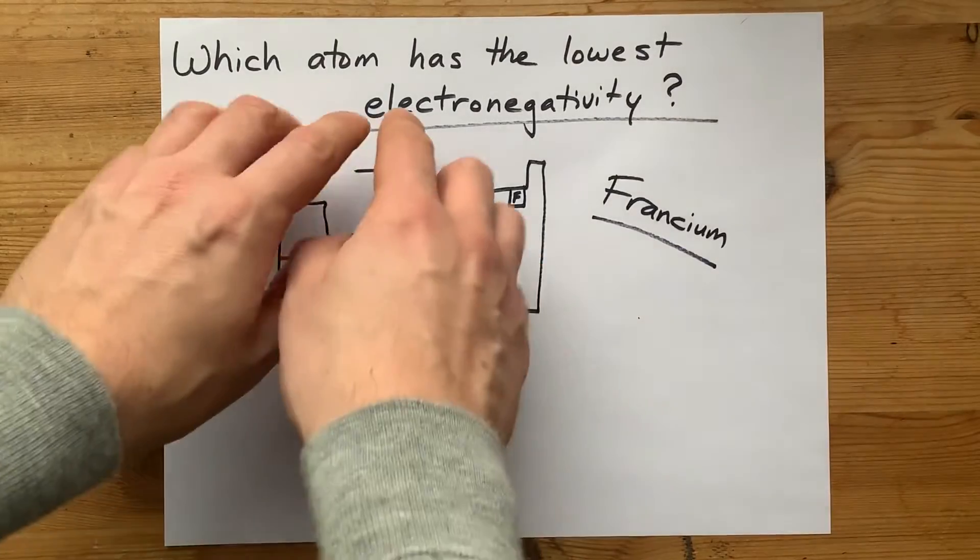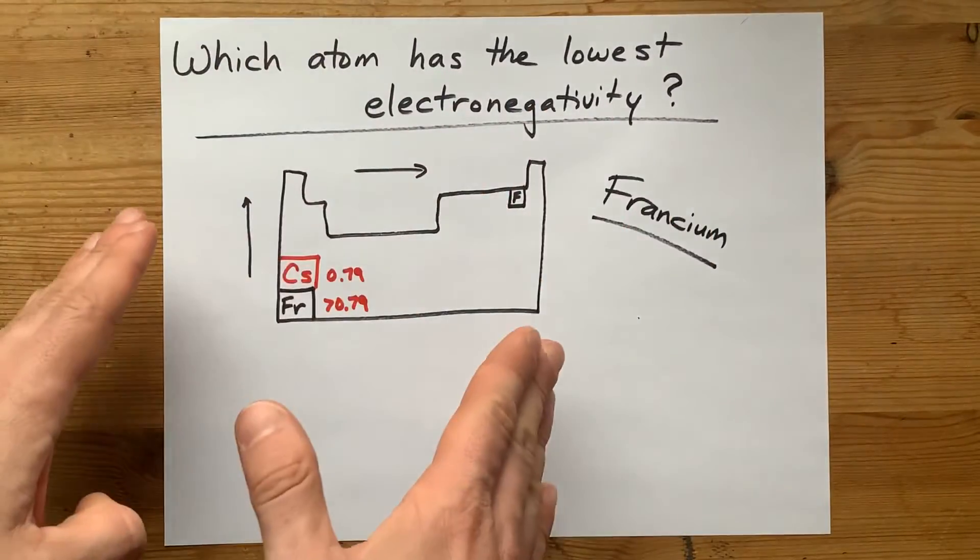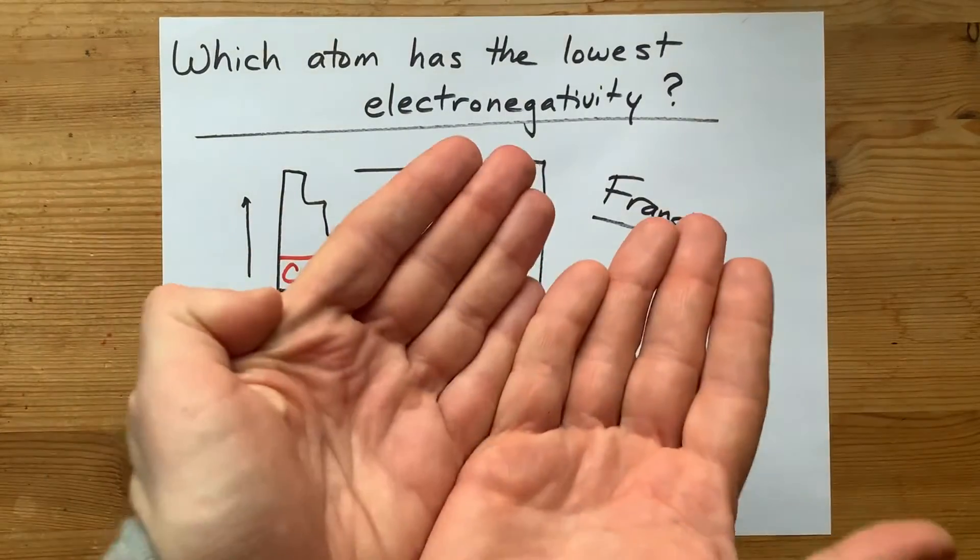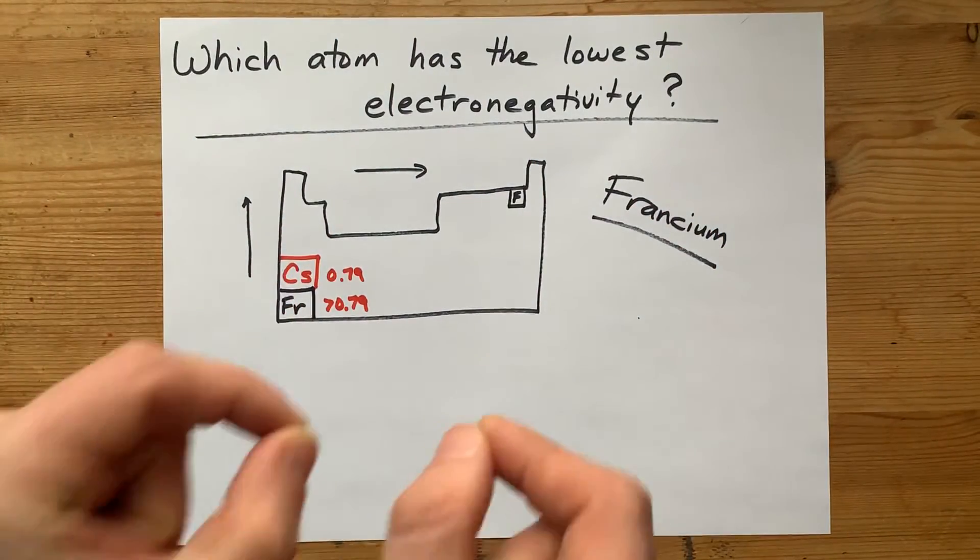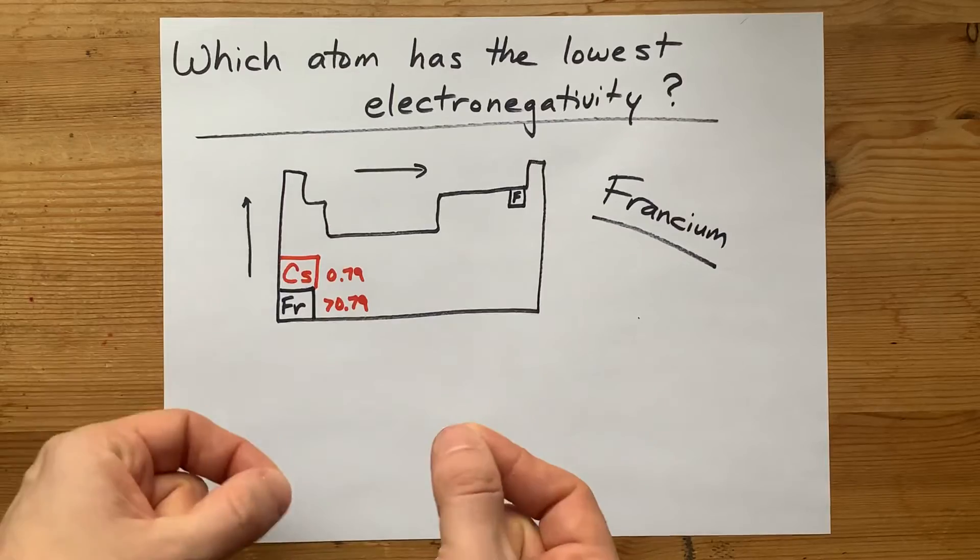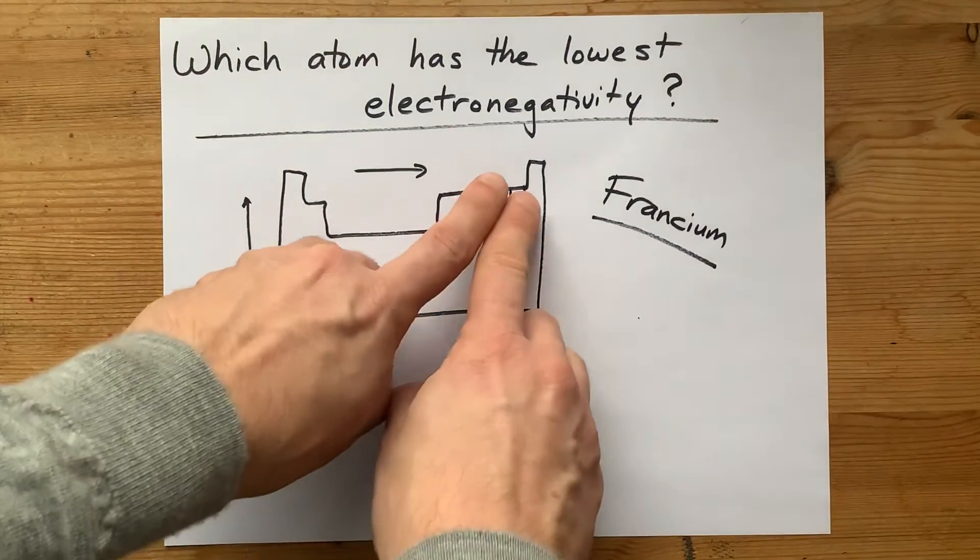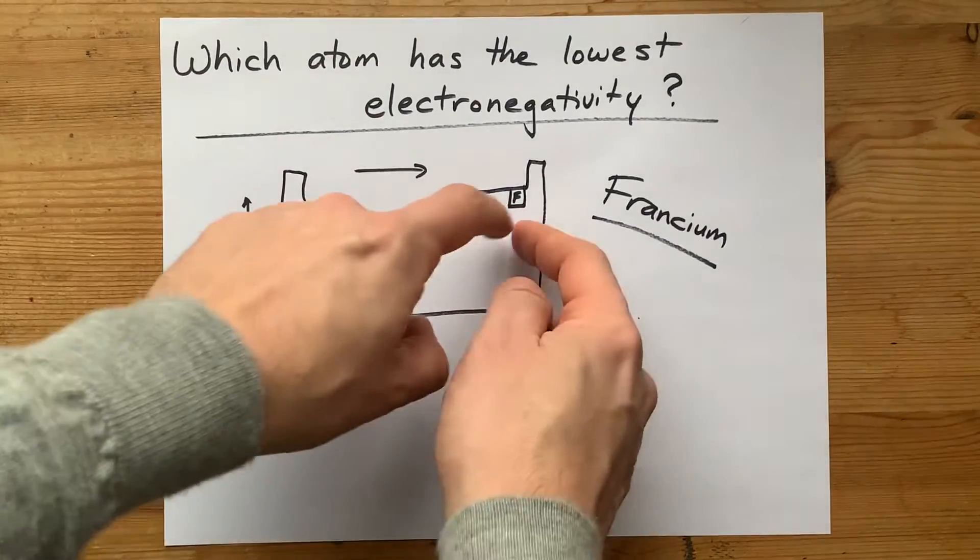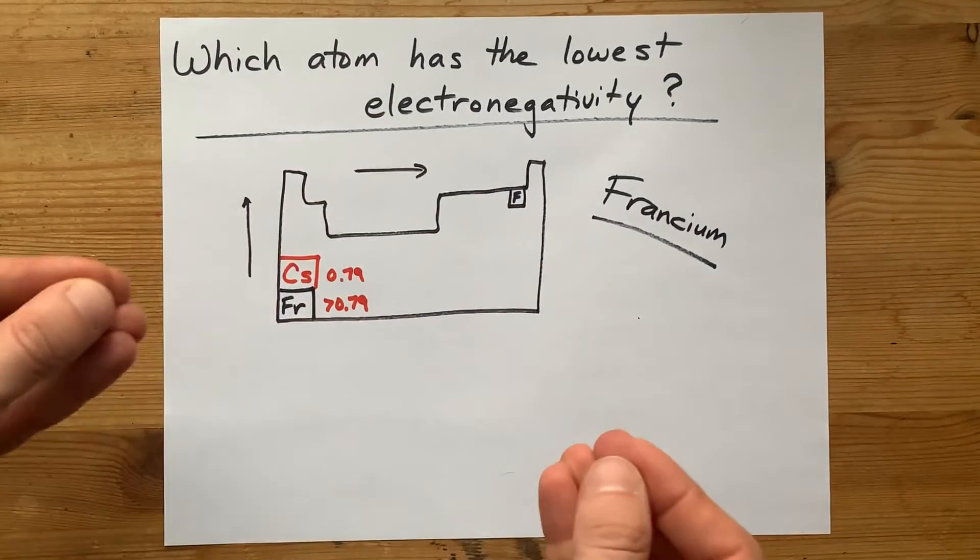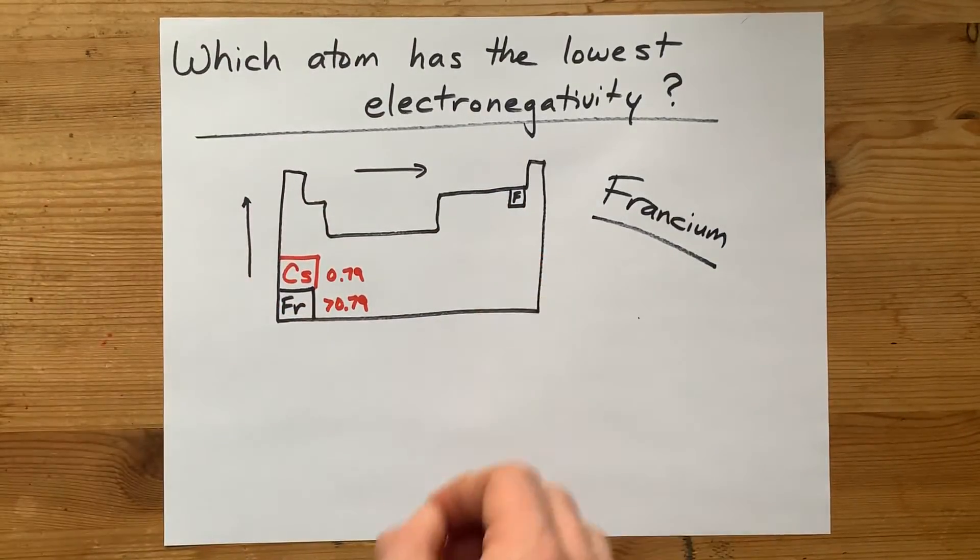And just remember that in general, when it comes to electronegativity, in the real world, you have a chart that you can look at and figure out the exact differences between the atoms. You're really being asked just about the trend here. The trend is that fluorine is highest and then stuff in the bottom left is generally lowest.